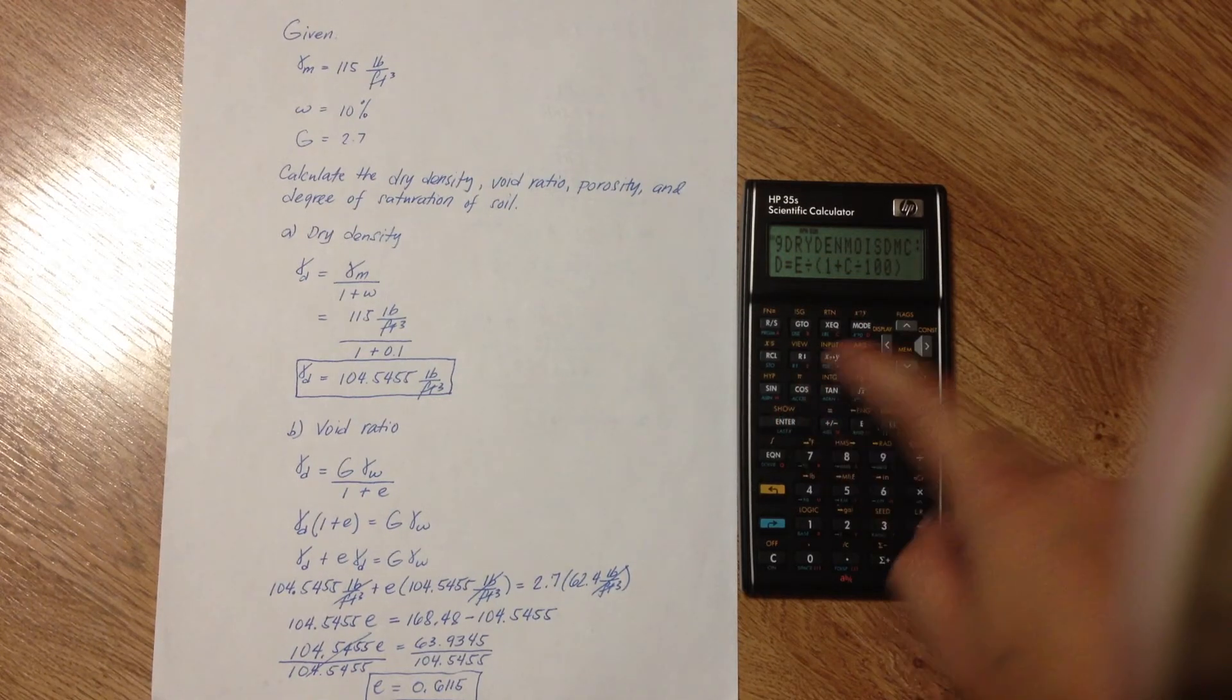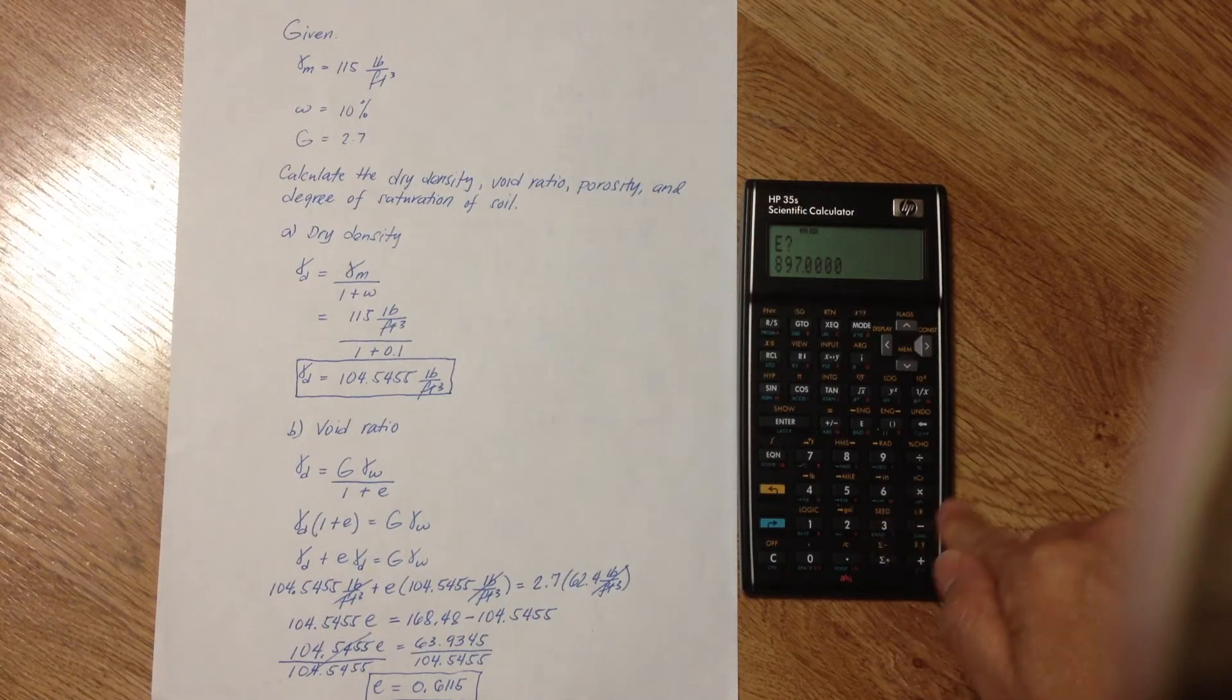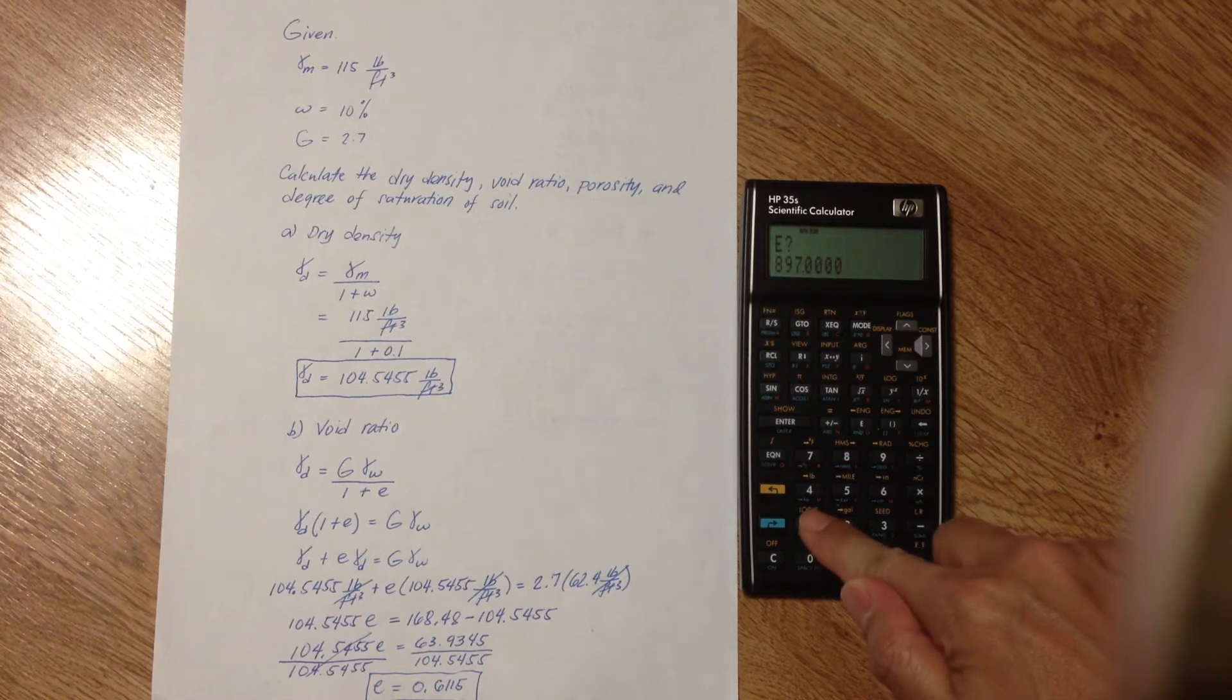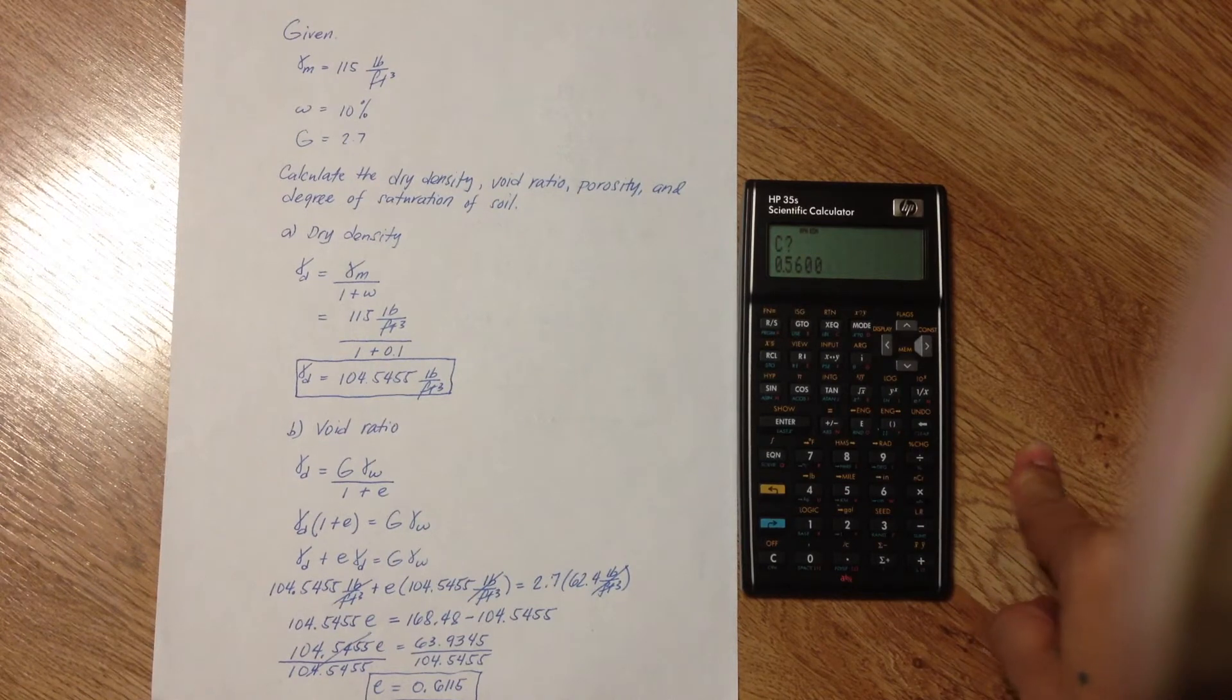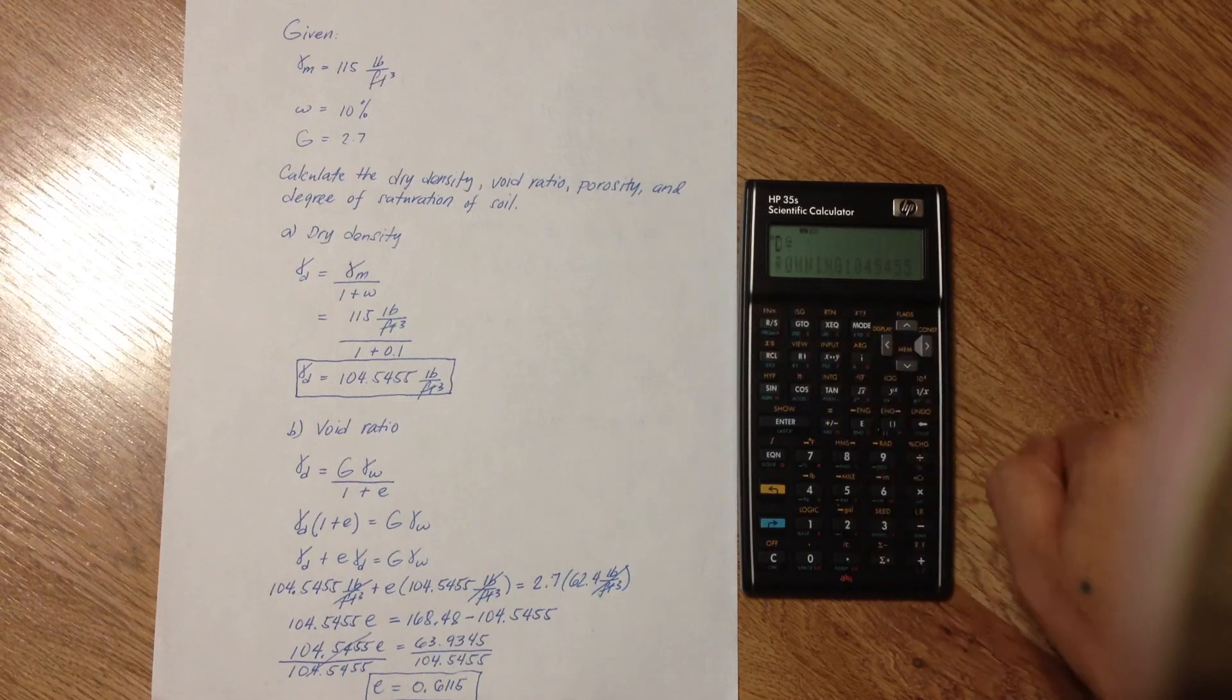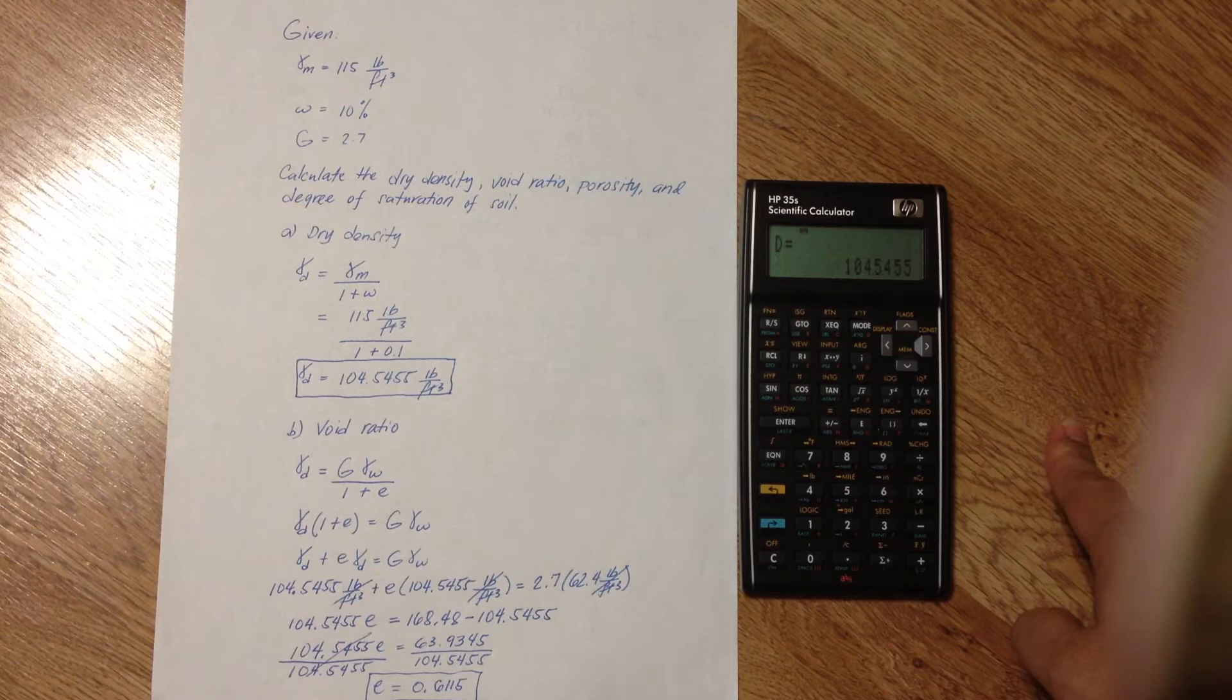Press Enter. E is moist density. Put down 115 and then RS. C is moisture content of 10%. Press 1, 0, and then RS. And that's your dry density, 104.5455.